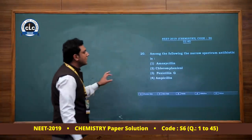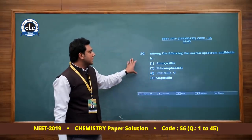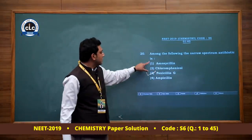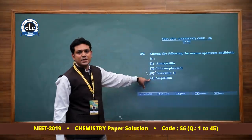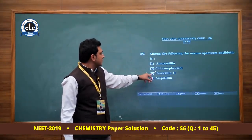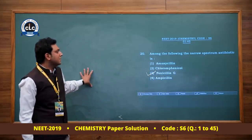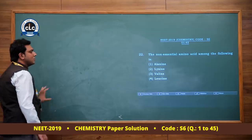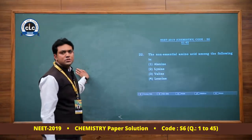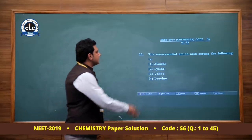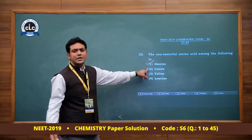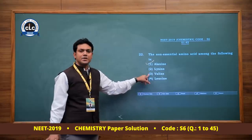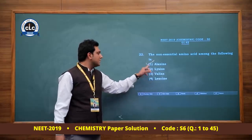Narrow spectrum antibiotics: penicillin G is narrow spectrum; other options (first, second, fourth) are broad spectrum. Answer: option 3, penicillin G. Non-essential amino acid — biomolecule question. Alanine is non-essential (body can synthesize it). Lysine, valine, and leucine are all essential amino acids. Answer: alanine.